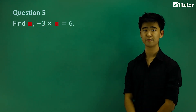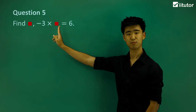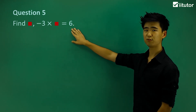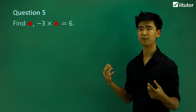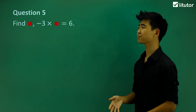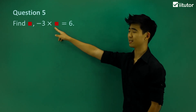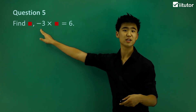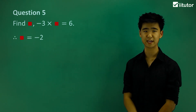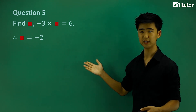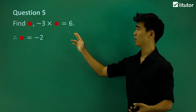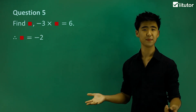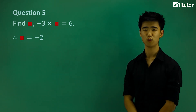Let's move on to number five: negative three times the box gives positive six. We know the number should be two. We have a negative sign and the result is positive, so the two signs multiplied together should have the same sign. The answer is negative two. The big takeaway: two signs that are the same always give a positive result, and two signs that are opposite always give a negative result.